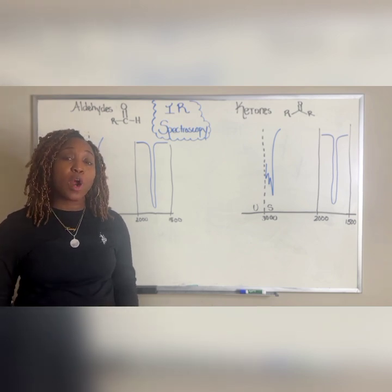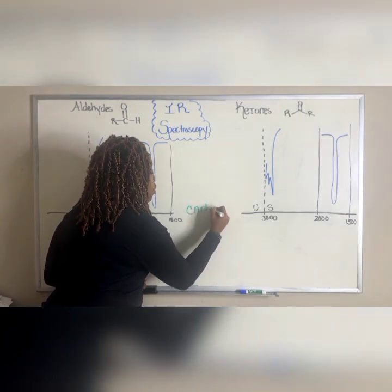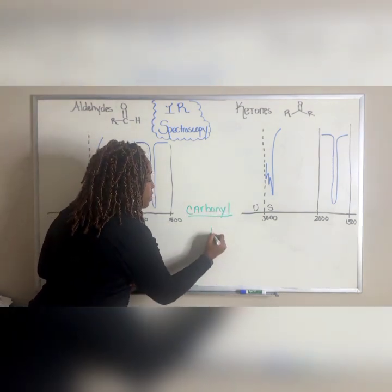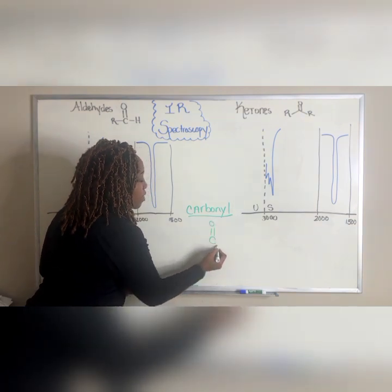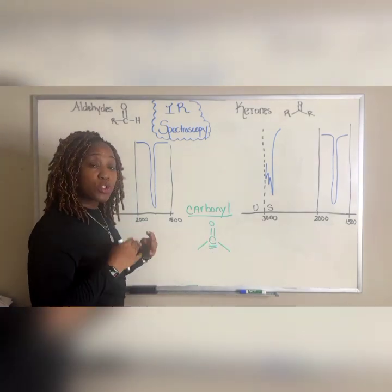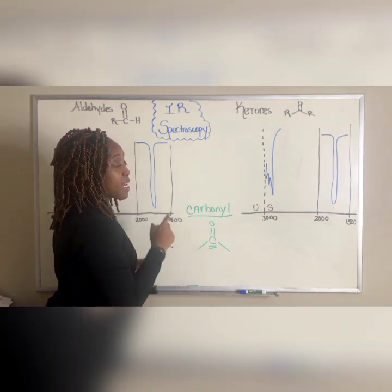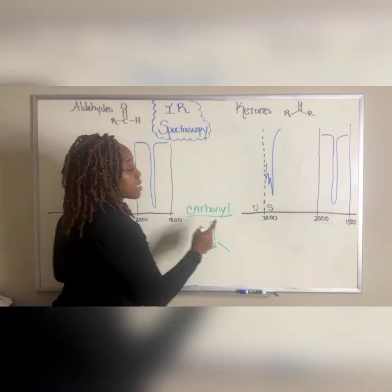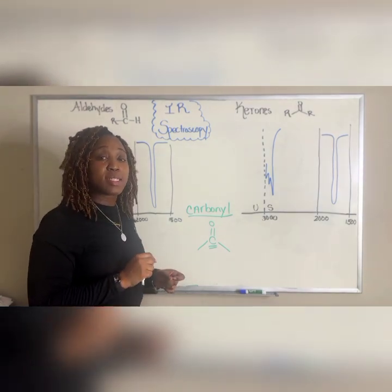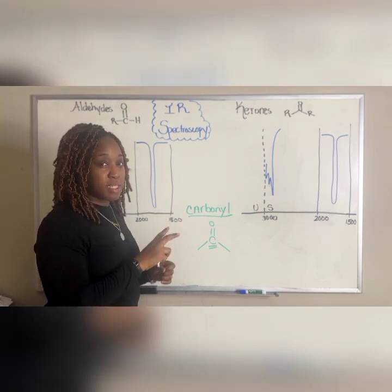Now that we're getting into our carbonyl compounds — a carbonyl is the C double bonded to an oxygen — this carbonyl is going to read in a specific region. That area where carbonyls show up is called Area C, located between 1500 and 2000. That's the area where you can see carbonyls, alkenes, and aromatic compounds in that specific zone.